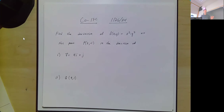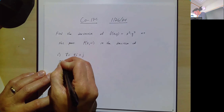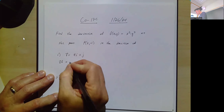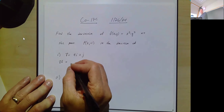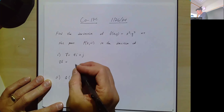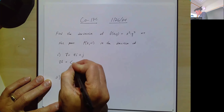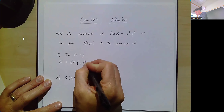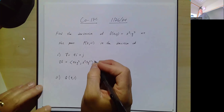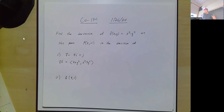To do a directional derivative, we need a few pieces of information. We need the gradient at the point and we need the direction as a unit vector. The gradient of f is just the partial derivatives as a vector. I like writing vectors with bracket notation. So the gradient is ⟨2xy³, 3x²y²⟩, or if you prefer, 2xy³ i + 3x²y² j.